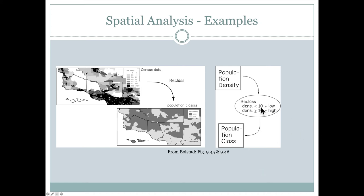Where the population density is less than two people per unit area, it's low population density, and greater than or equal to 10 people is high population density. So now we have two classes in two different GIS layers.